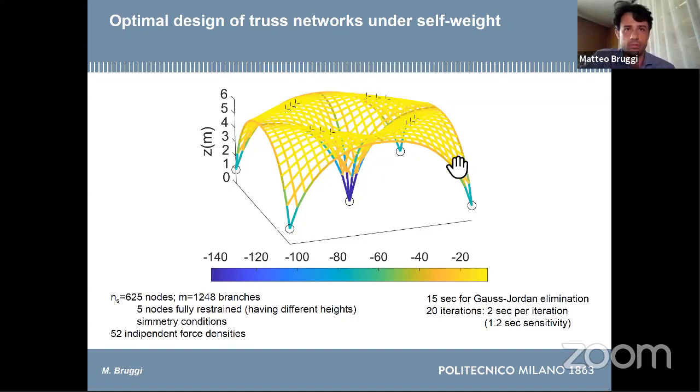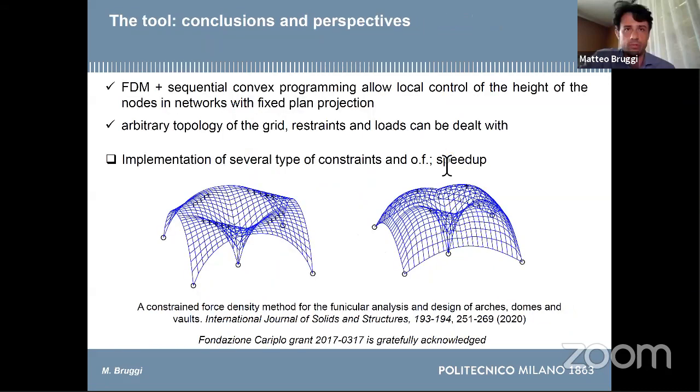This is a simple example of a symmetric structure. There are a lot of restraints and the number of independent unknowns is very low. You need very few seconds to control point by point all the coordinates. The idea was to do a first attempt investigation to join the well-known force density method with the technique of sequential convex programming.